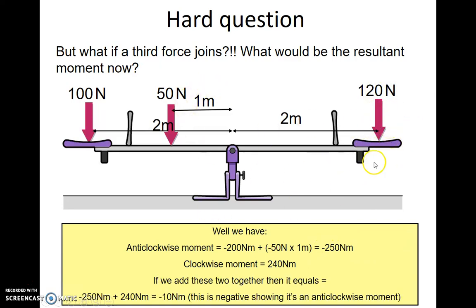I still have the clockwise moment of 240 newton meters. If I add all these together now, I get minus 250 plus 240 newton meters, which is minus 10 newton meters. This is negative, showing it's an anti-clockwise moment. So now the seesaw is going to move down this way.